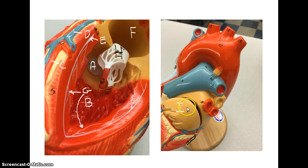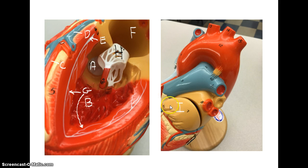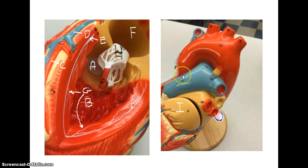There's also a structure you haven't seen yet: when the flap of the model is closed, you see the auricle, which is the flap that sits over the atrium. There is a right and left auricle, each sitting over its respective atrium.